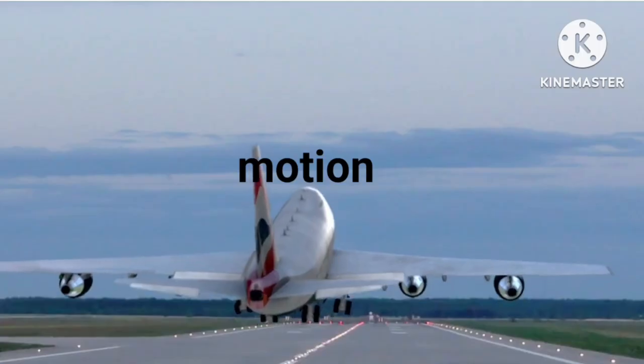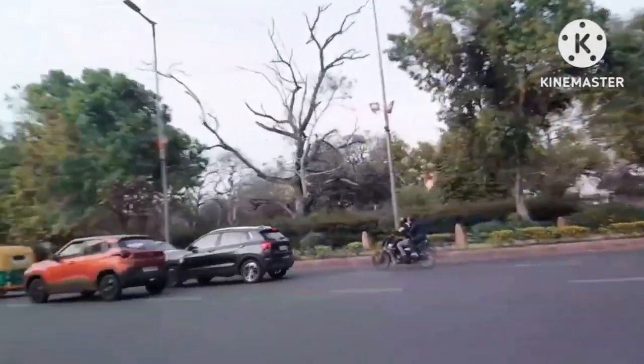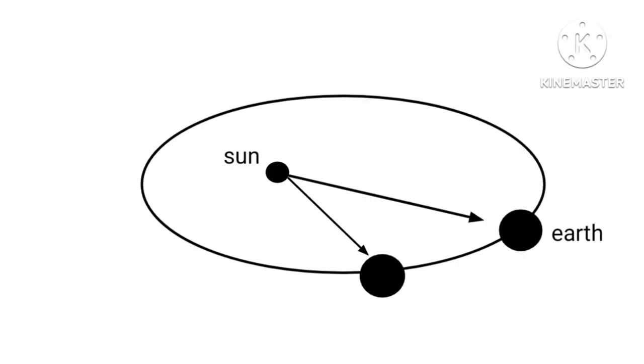Here we shall now try to understand motion. An aeroplane flying in the sky, a car running on a straight road, the sprinter running on a track race, Earth revolving around the sun are all examples of motion.